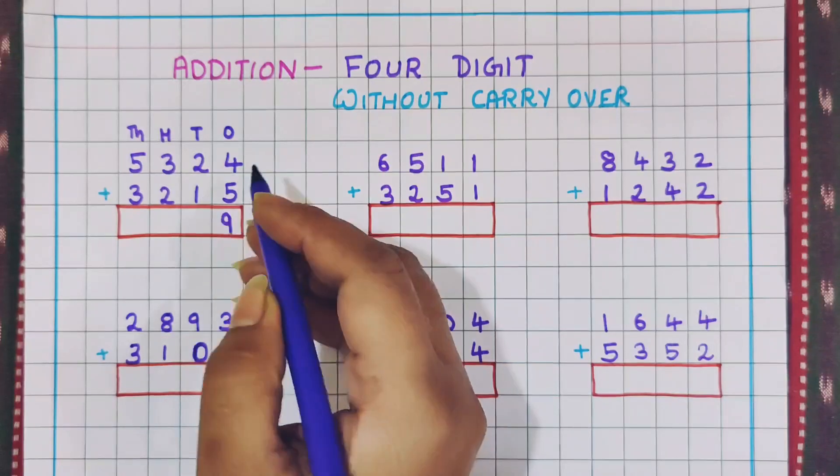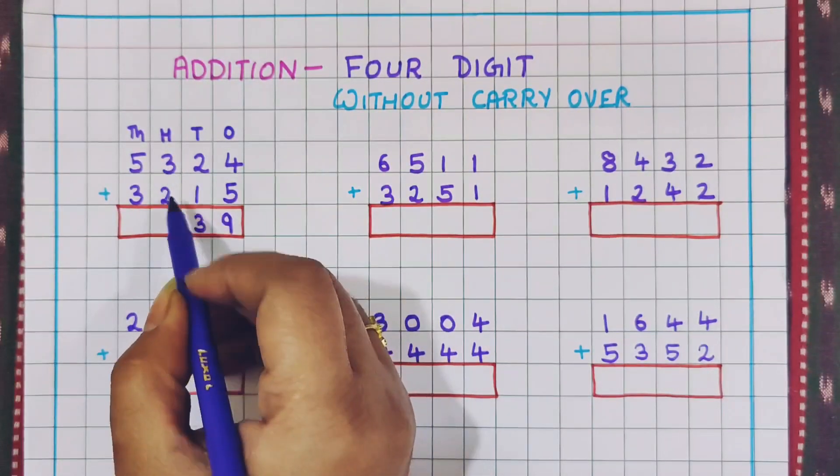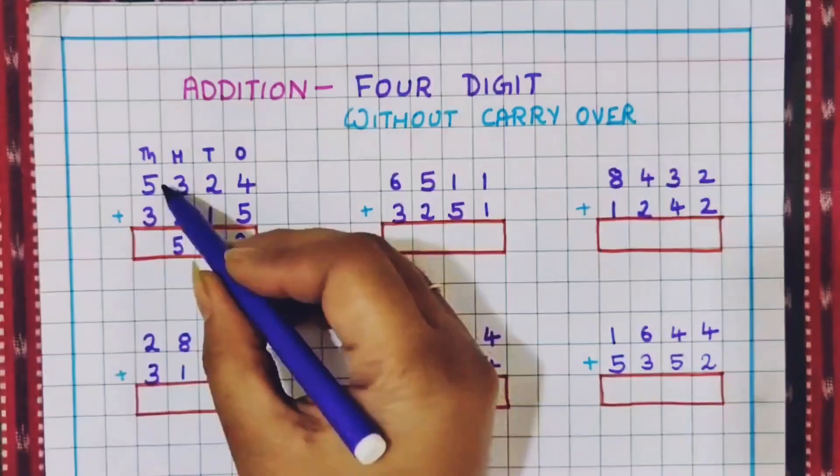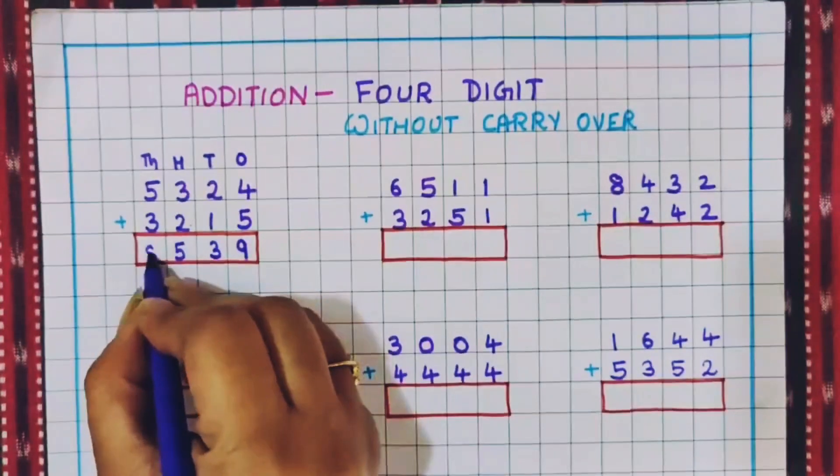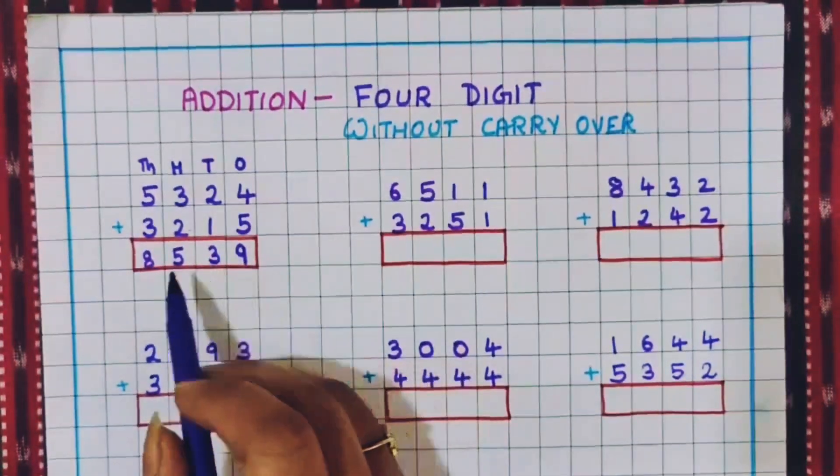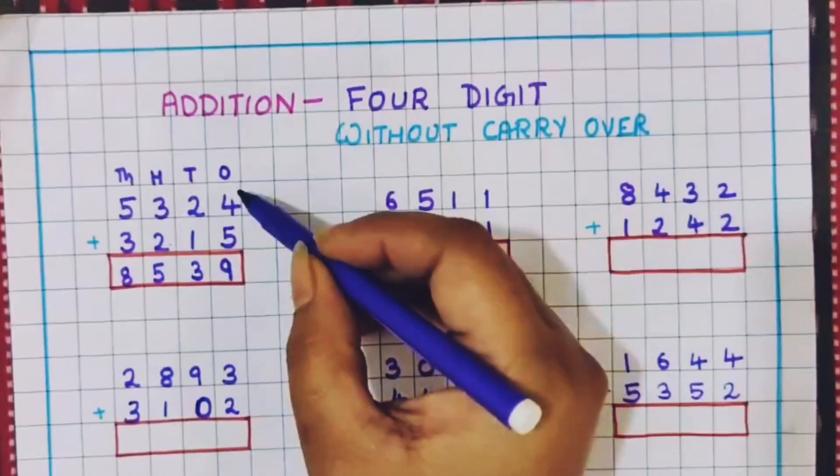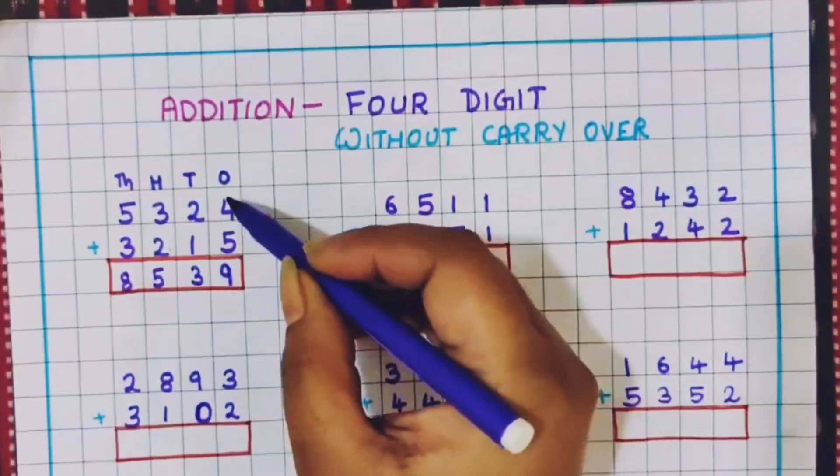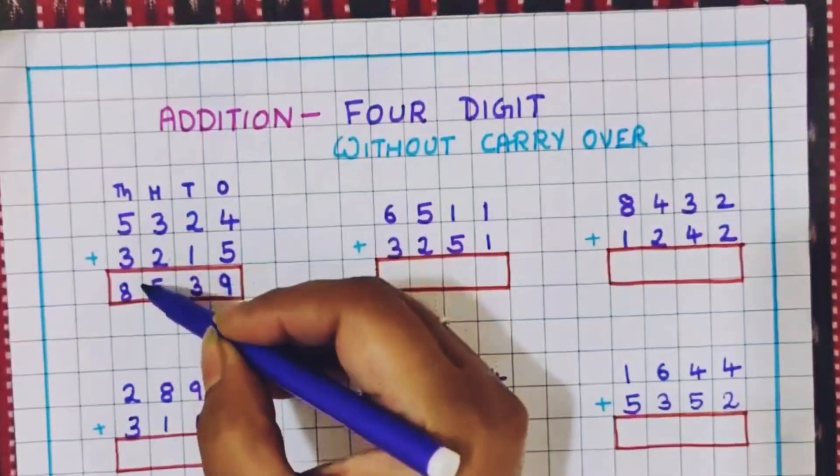2 plus 1 is 3. Then 3 plus 2 is 5. Then 5 plus 3 is 8. So we will write here 8. So always remember in addition we are going to firstly add the ones digit numbers, then the tens digit, then the hundreds and then the thousands digits.